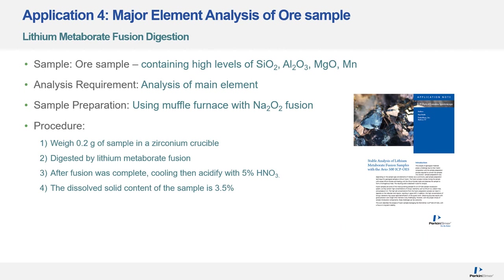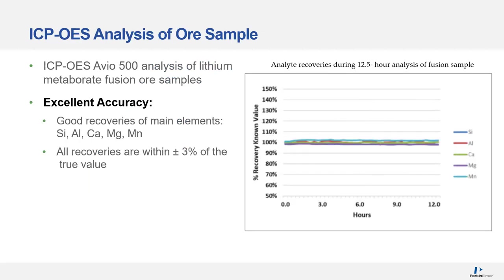In the fourth application, major elemental analysis of ore samples was performed using a lithium metaborate fusion digestion. This sample contains high levels of silicon oxide, aluminium oxide, magnesium oxide, and manganese, which require lithium metaborate fusion for full digestion. An ICP-OES Avio 500 was used, and excellent recoveries were achieved for all main elements — silicon, aluminium, calcium, magnesium, and manganese — over a 12.5-hour fusion run, with all recoveries within plus or minus 3% of the true value.